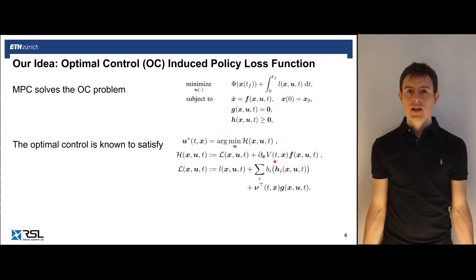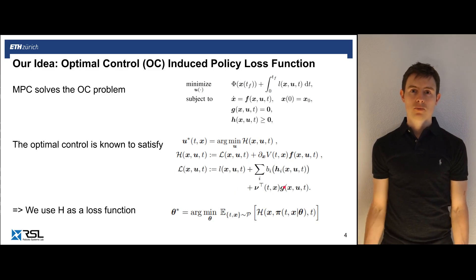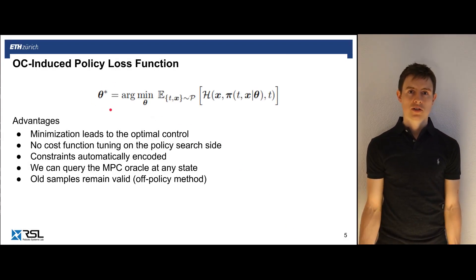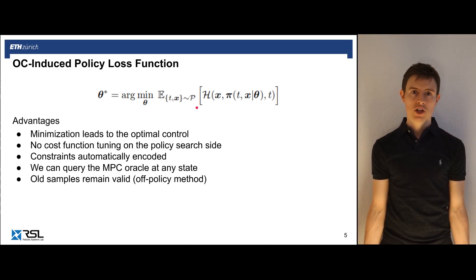Now, our idea is to inject a parameterized policy for our inputs into the control Hamiltonian and simply minimize this control Hamiltonian for distribution of states with respect to the parameters of our parameterized policy. If this succeeds, the optimal parameters should yield an optimal controller. To recap, what we try to find is the optimal parameters theta star that minimize the control Hamiltonian over the distribution of states. And this is the advantage that once we have found those optimal parameters, this directly leads to the optimal control as we've established in the previous slide. And there's no more additional cost function tuning needed on the policy learning side because the policy loss function drops out automatically.